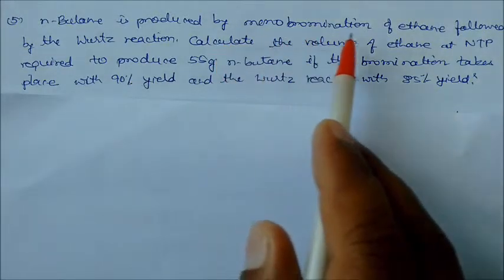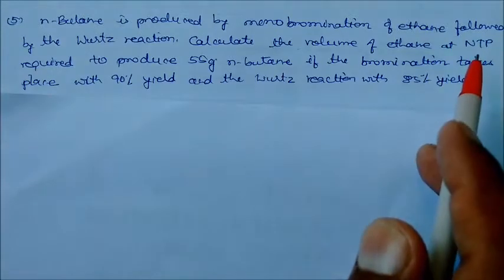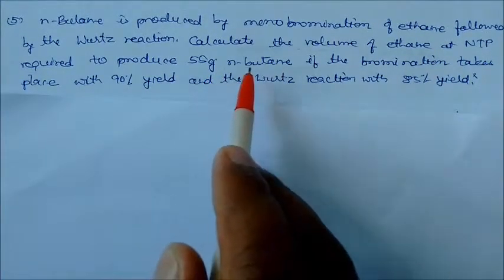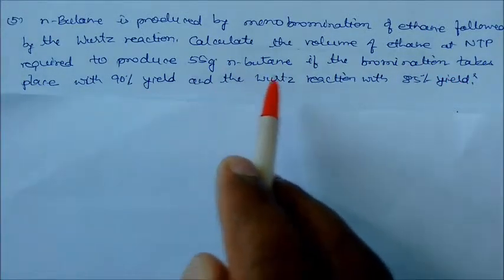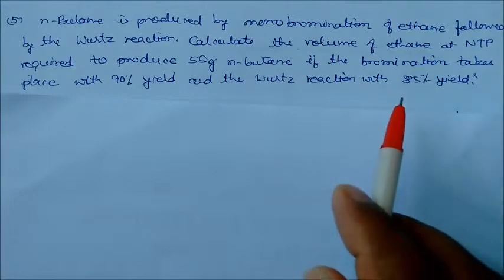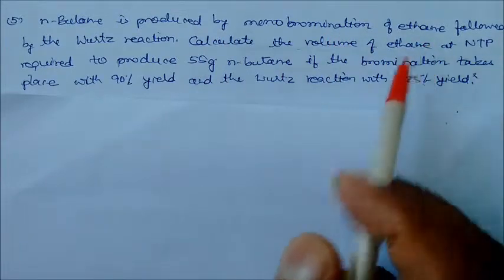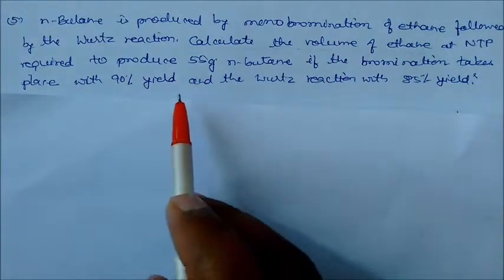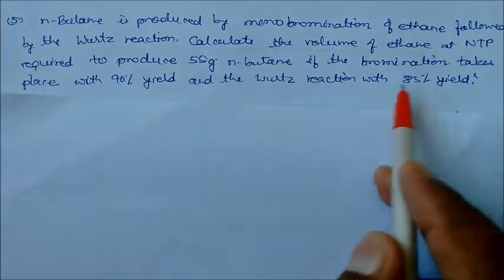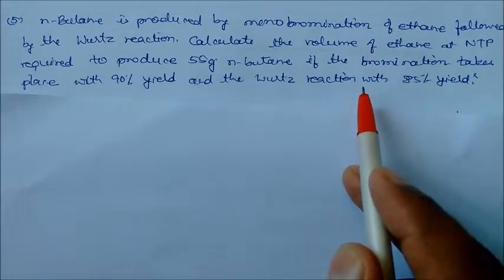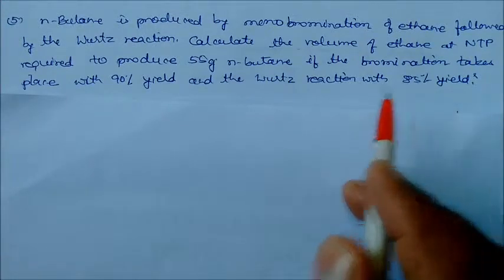N-butane is produced by monobromination of ethane followed by the Wurtz reaction. Calculate the volume of ethane at NTP required to produce 55 grams of N-butane, given that bromination takes place at 90% yield and the Wurtz reaction at 85% yield.